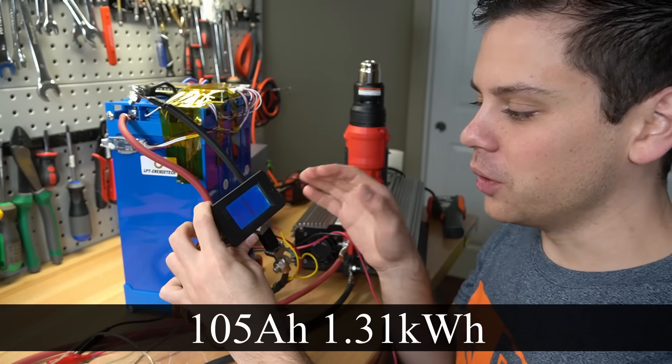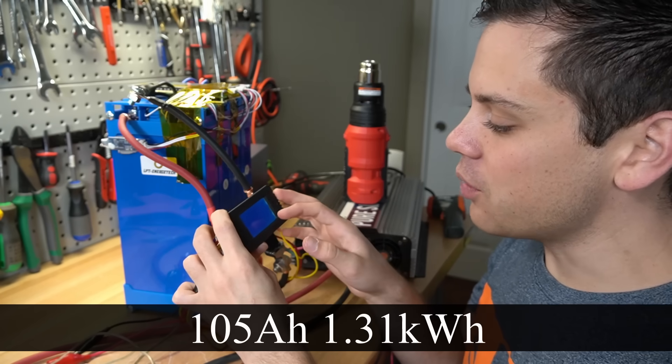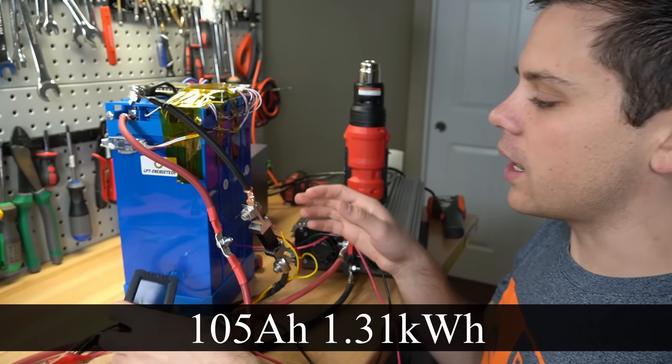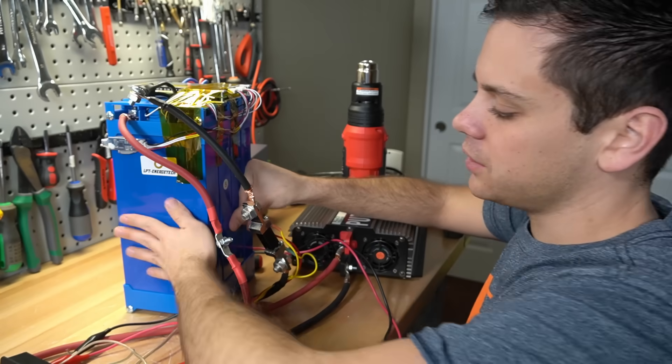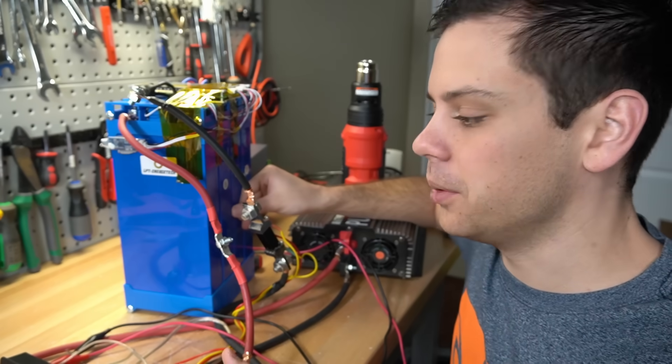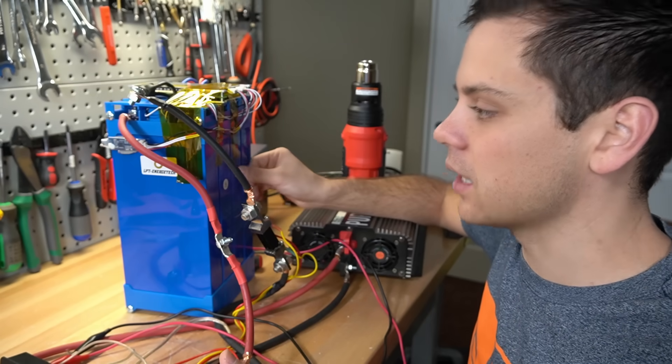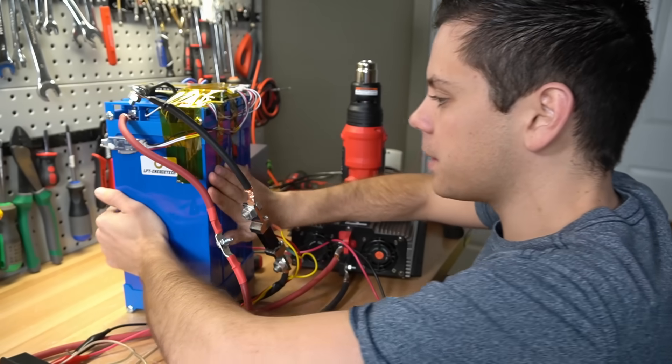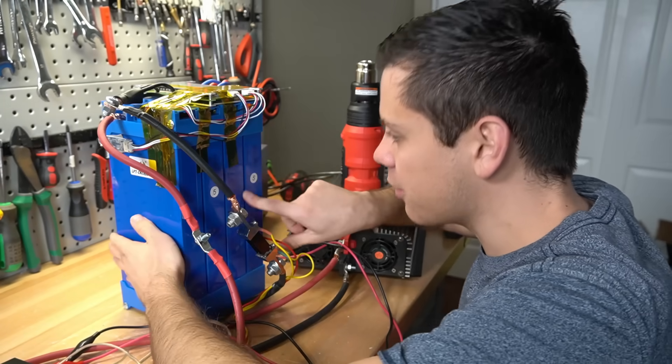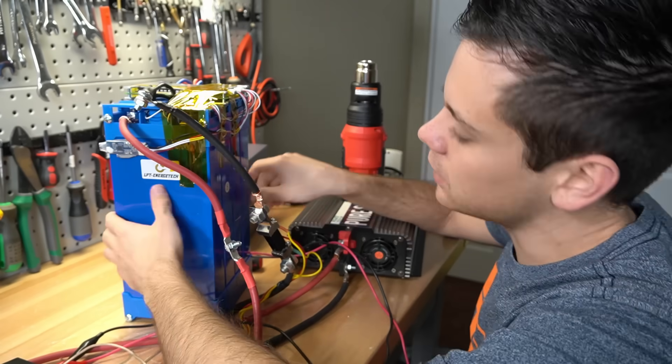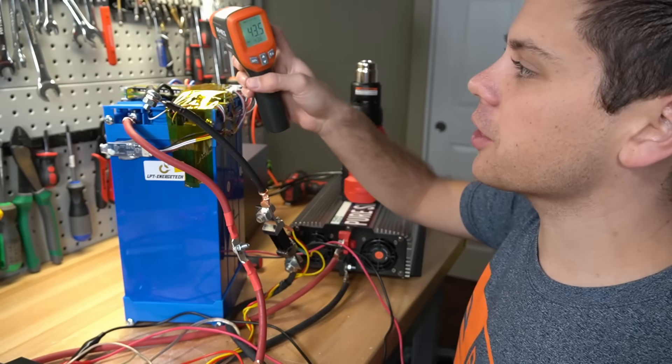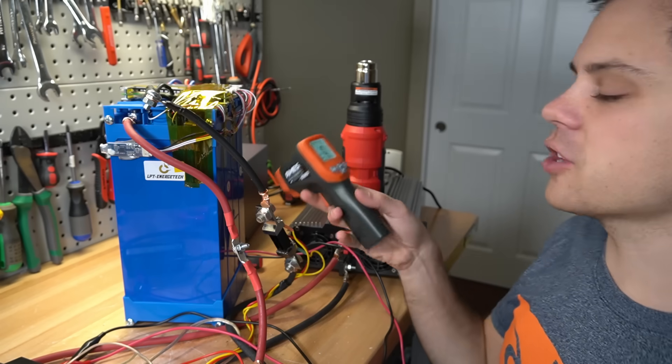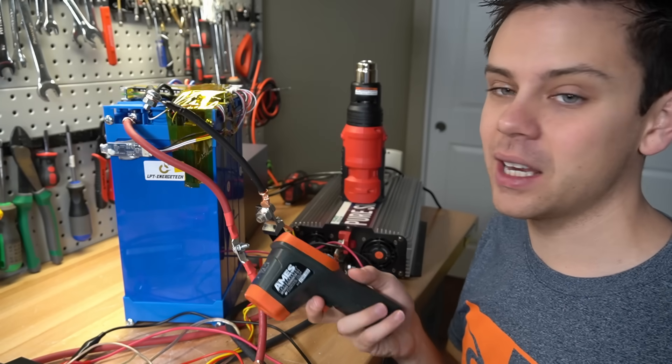In one hour we pulled 105 amp hours and 1.31 kilowatt hours. But these are very new cells and that's pretty common for the first couple cycles to pull past capacity. But at a 1C rate that's really good. And they're warm but they're not that warm and it's just so nice to have that airflow. This is such a good design. And the BMS is at 43 degrees celsius or 110 degrees fahrenheit which is plenty good.